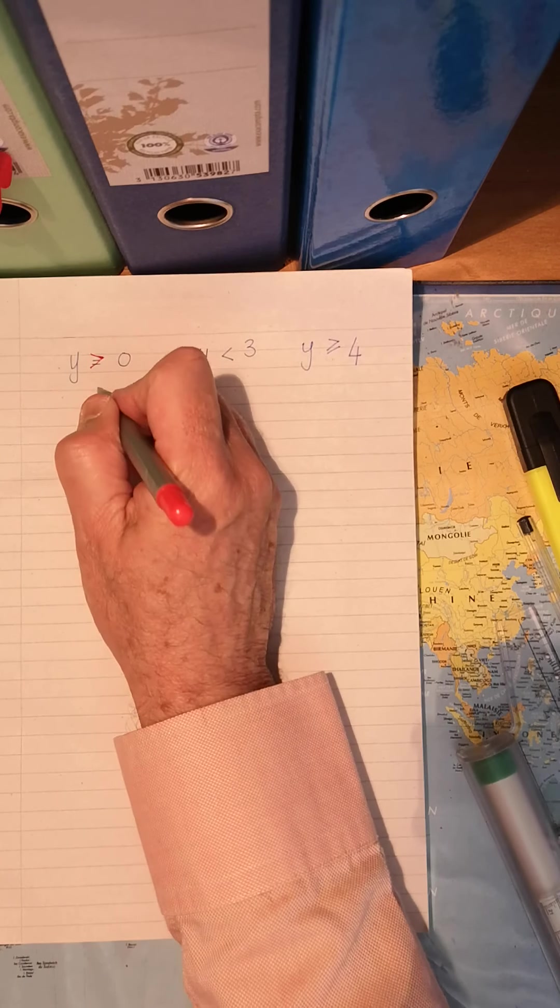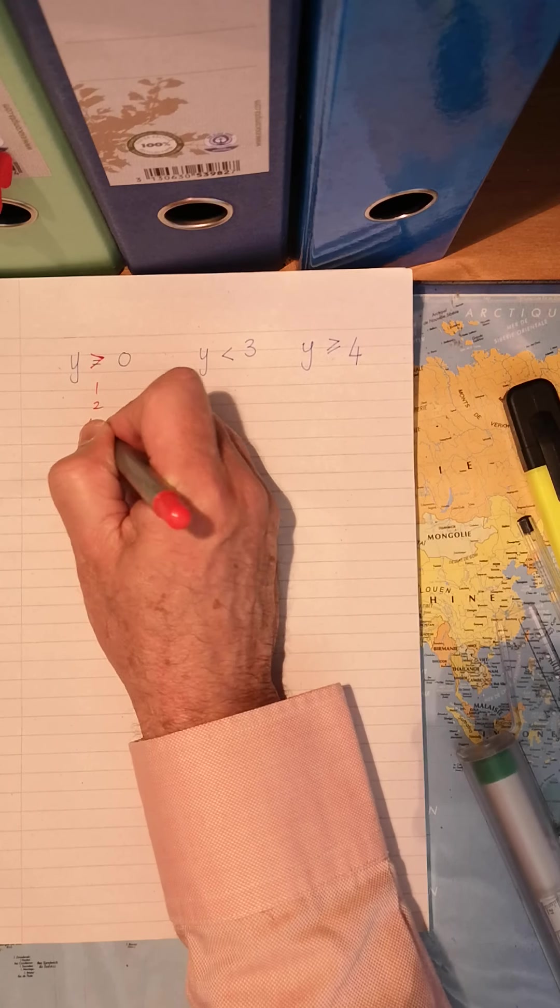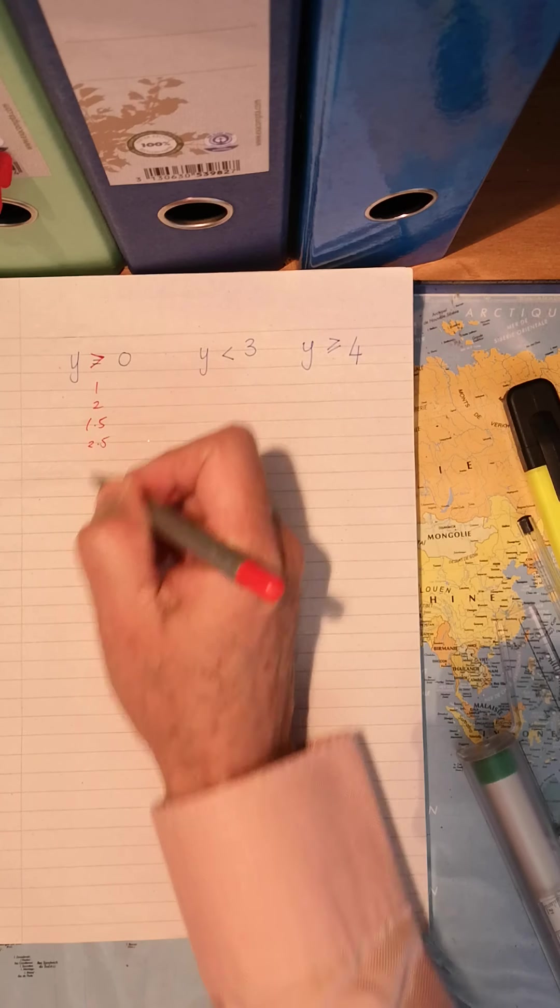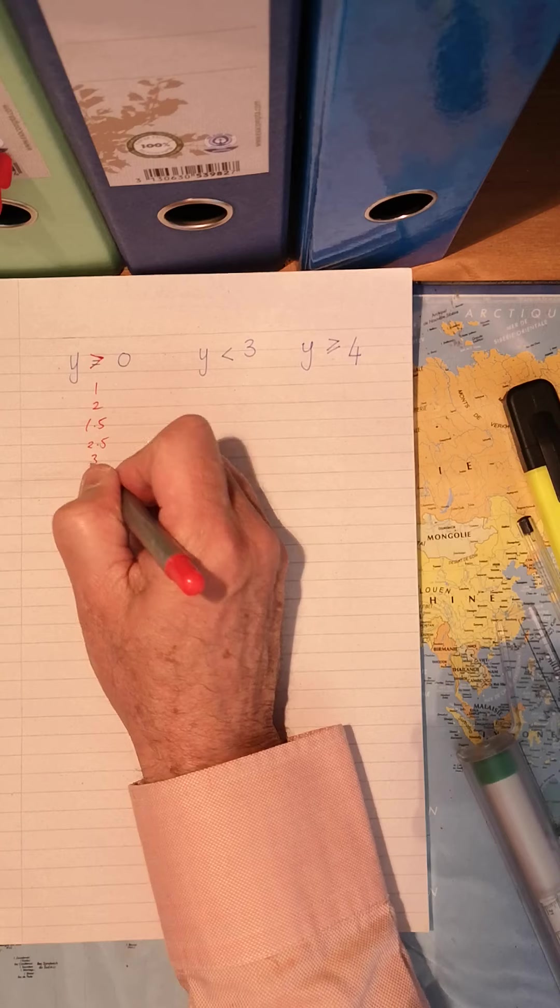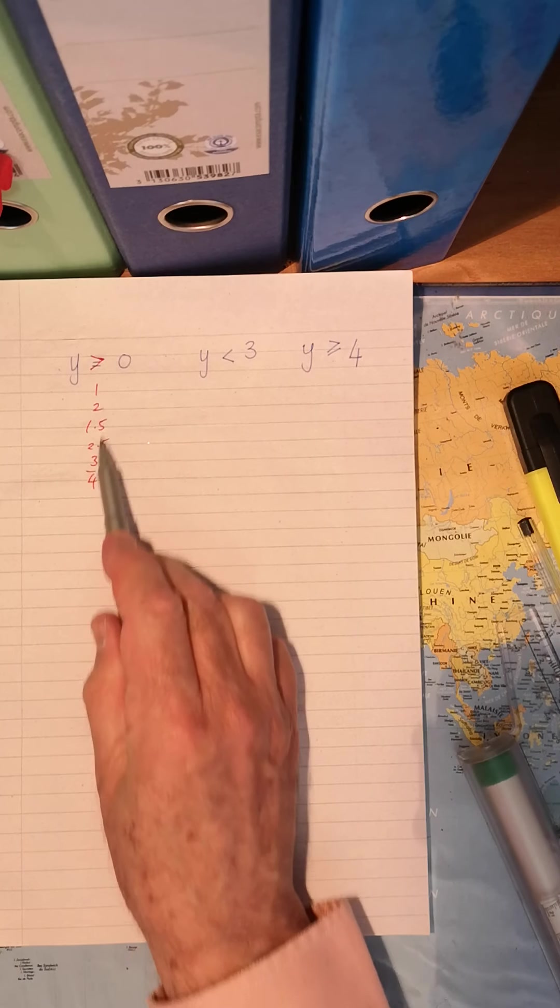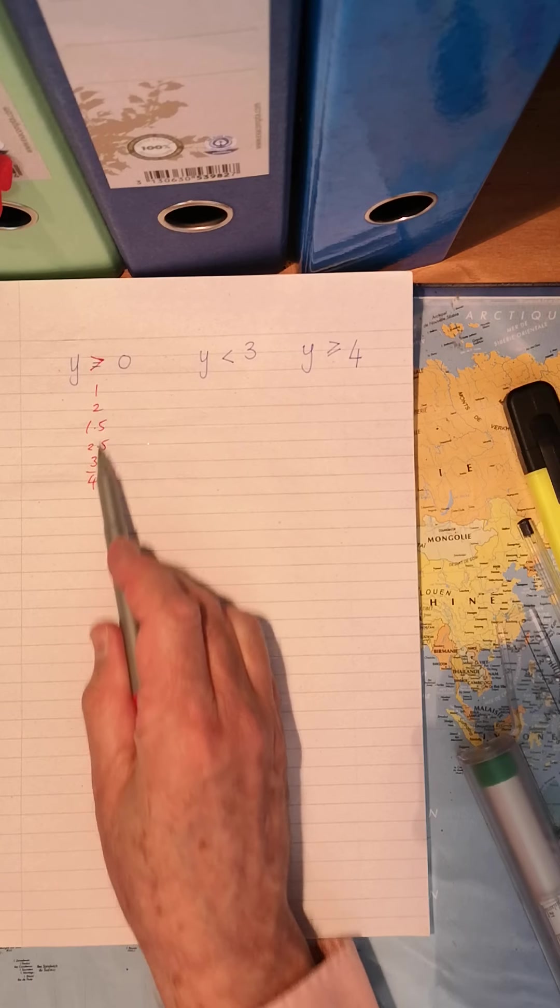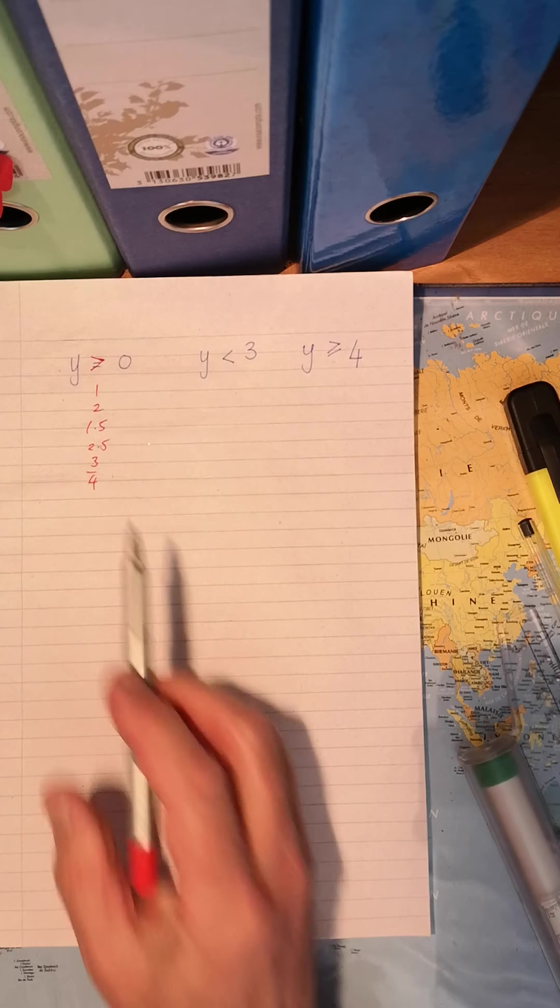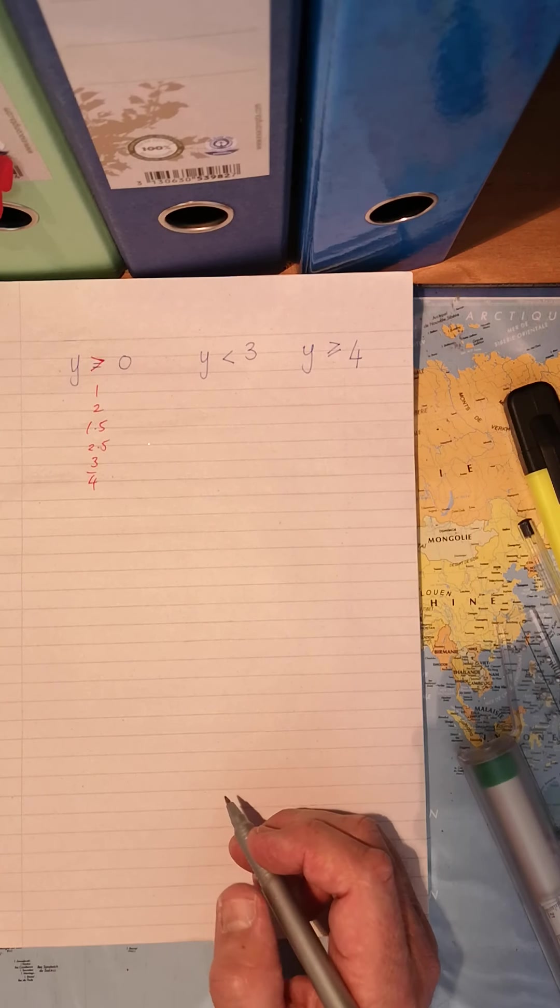No. We could start with one, 1.5, 2.5. We could have three quarters. Okay. So that, substituting those numbers in for Y, it is bigger than naught.